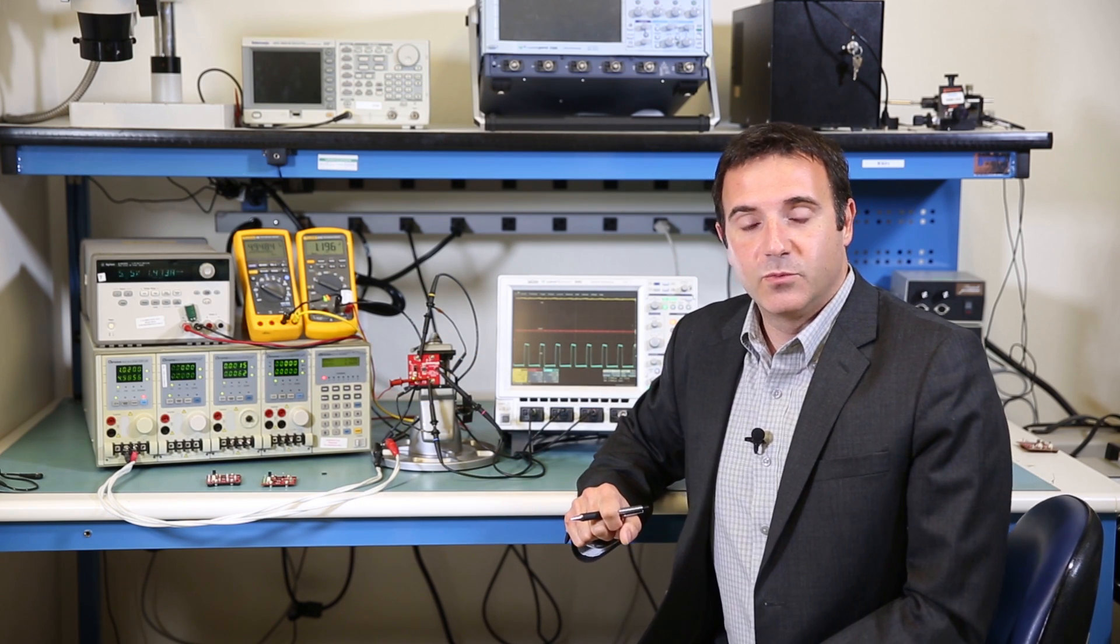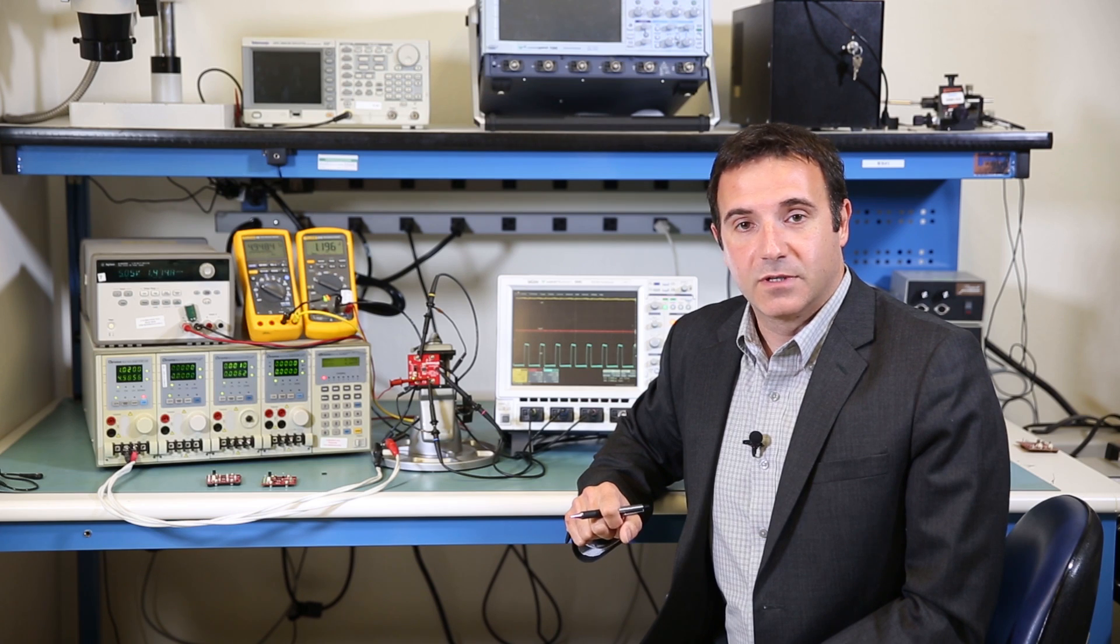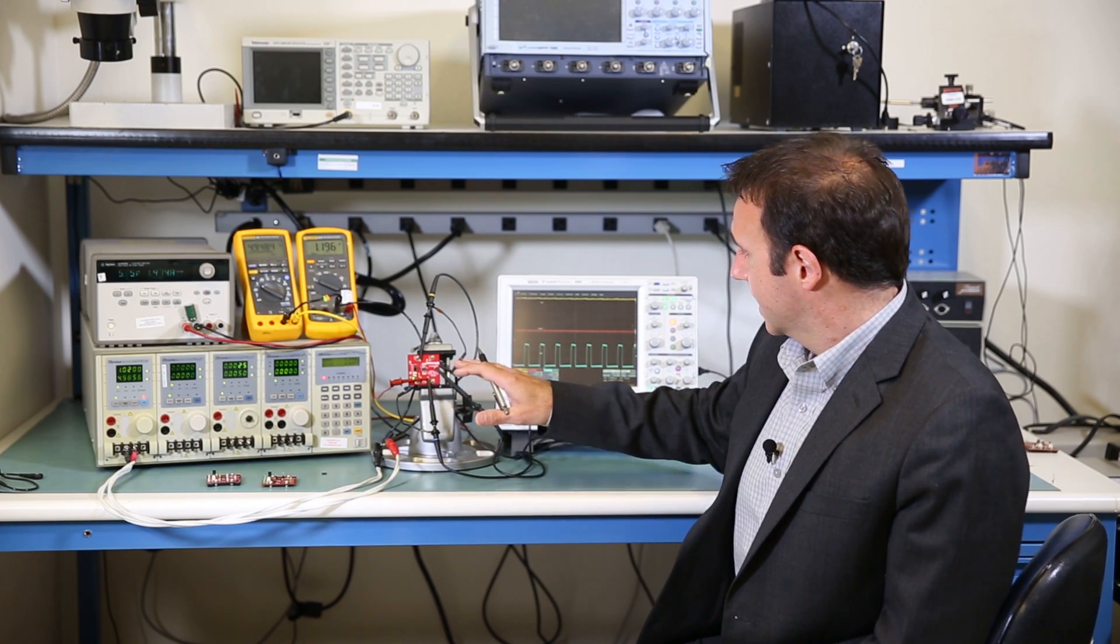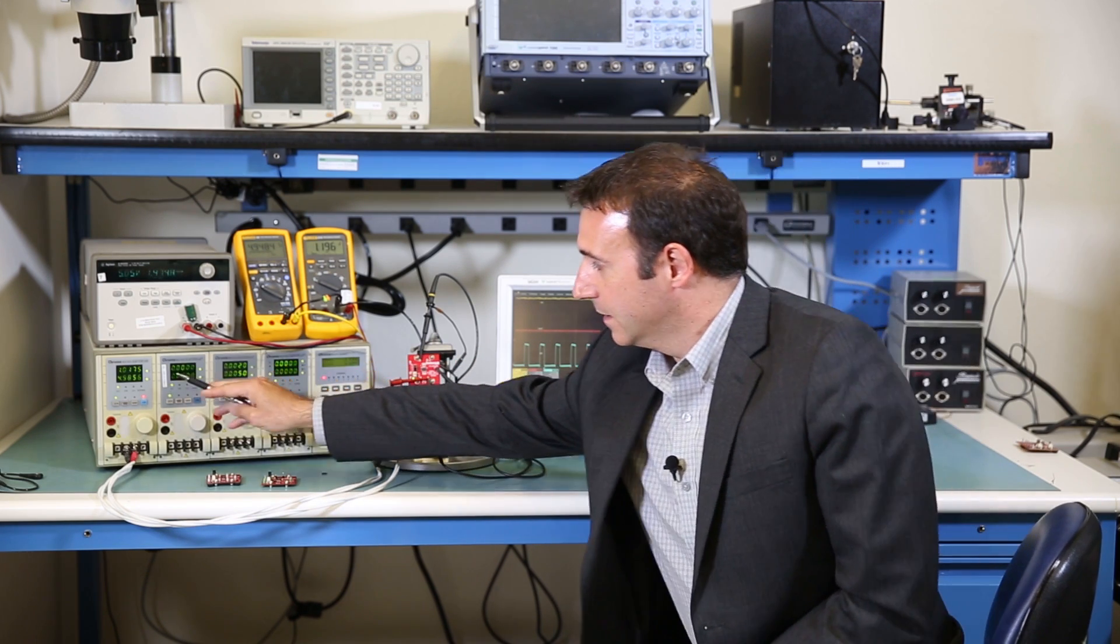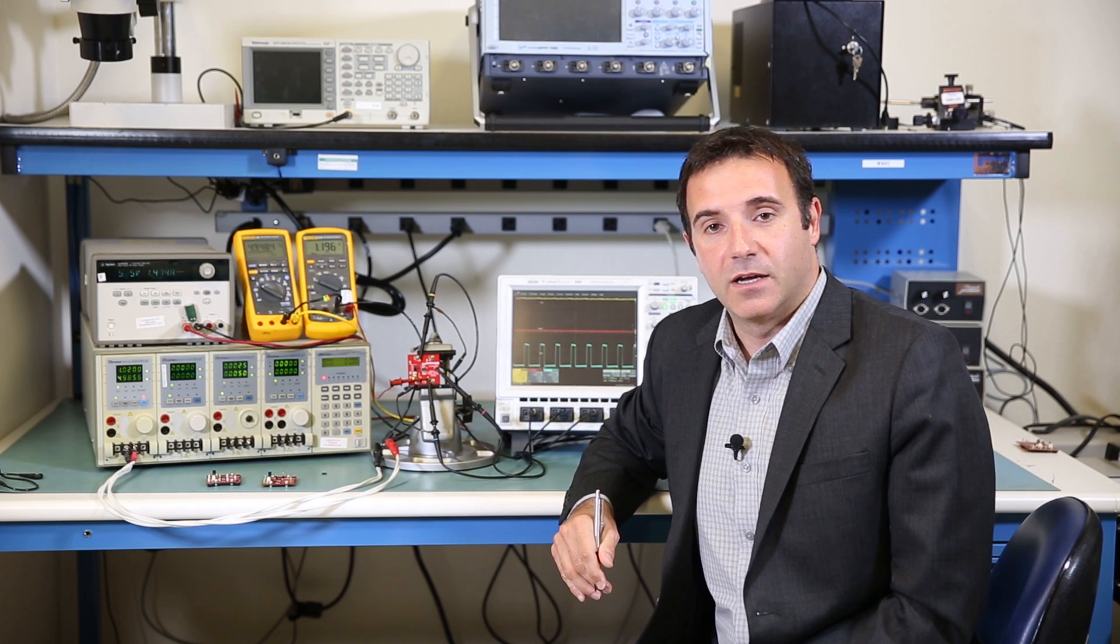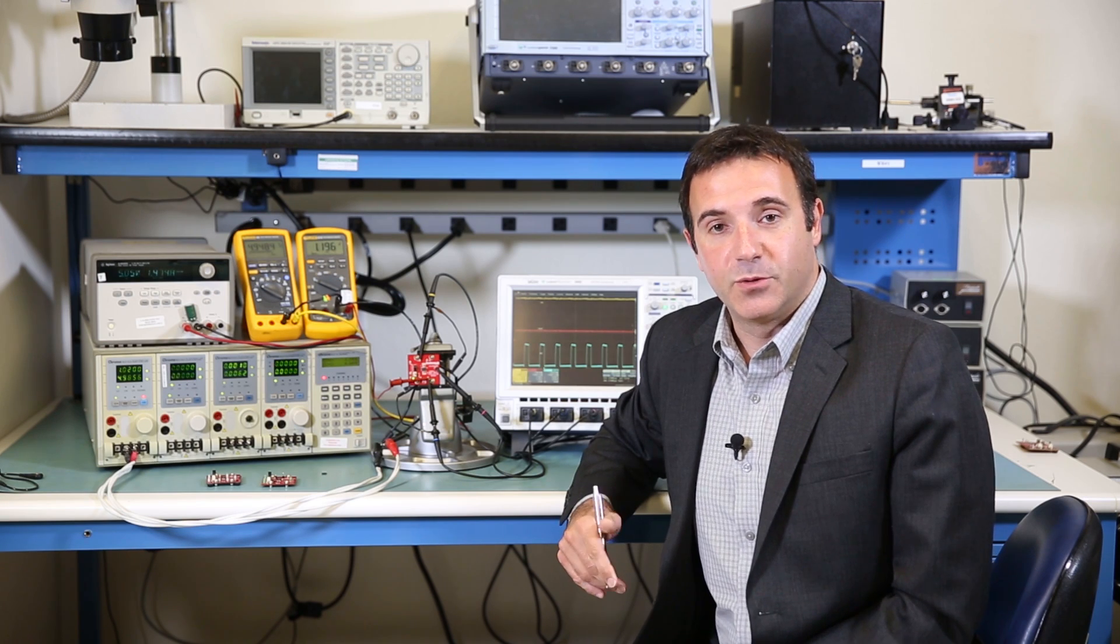The output current will be set through a classical chroma load. In this case, we're actually currently running at 5 amps output, the maximum output current available for the ISL8202 and 8205M.